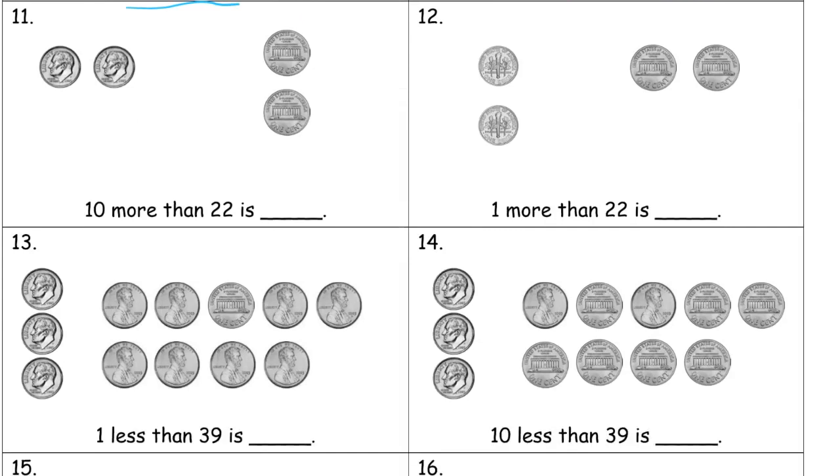Ten more than twenty-two. So we have two dimes and two pennies. So ten more means I need one more dime. There's my ten more. Thirty-two. Ten, twenty, thirty, thirty-one, thirty-two. One more than twenty-two. These are dimes here and these are pennies. So I need one more. So I need another penny. So penny and I'll draw the back of the penny and make it look like the Lincoln Memorial. And that's twenty-three.